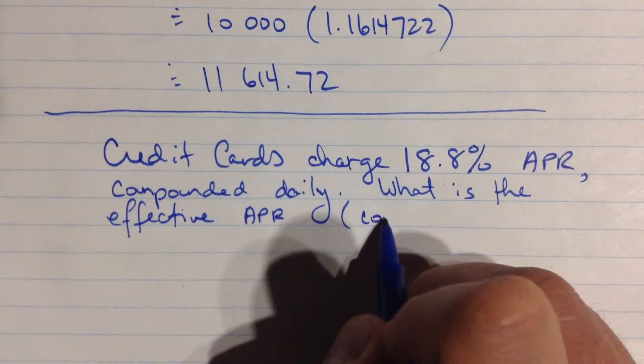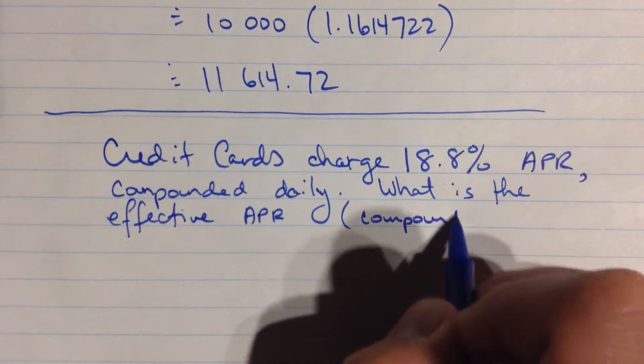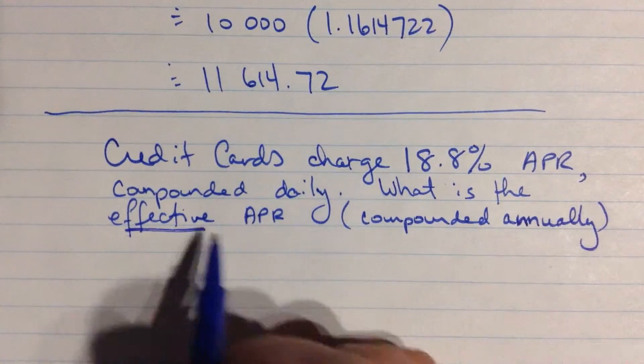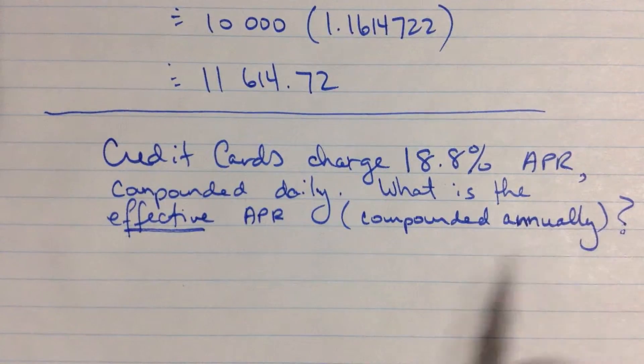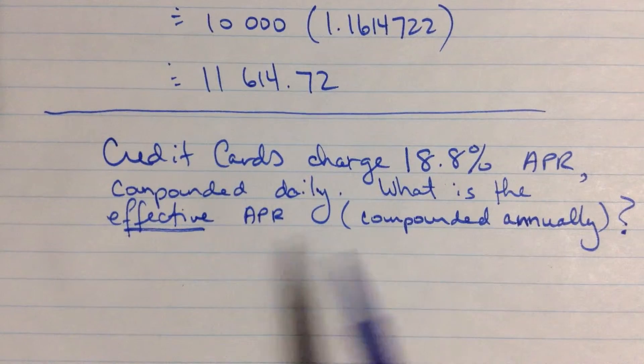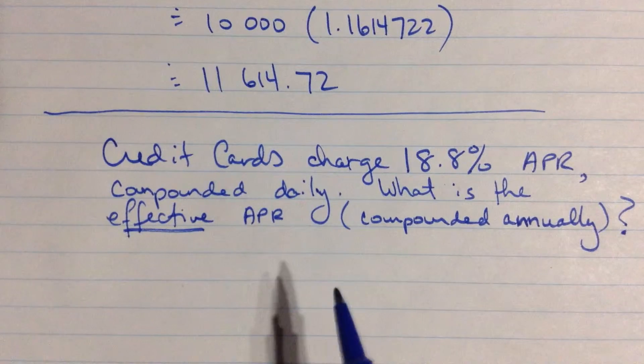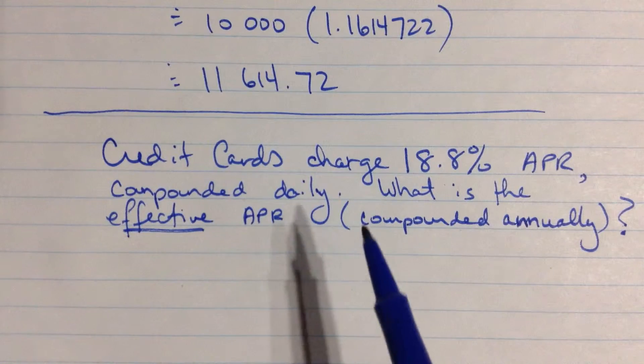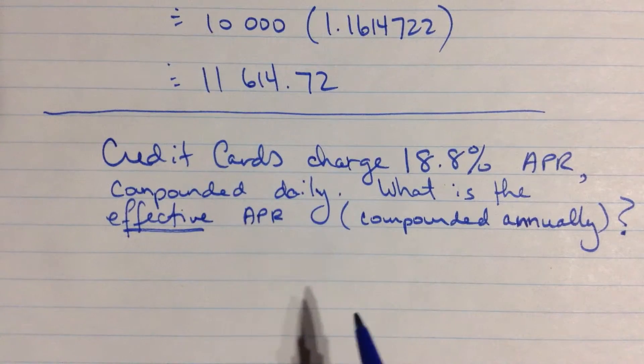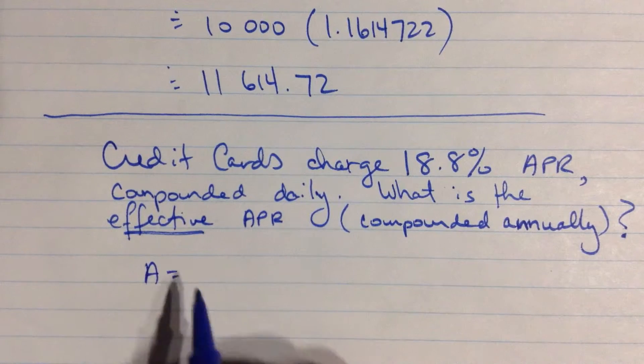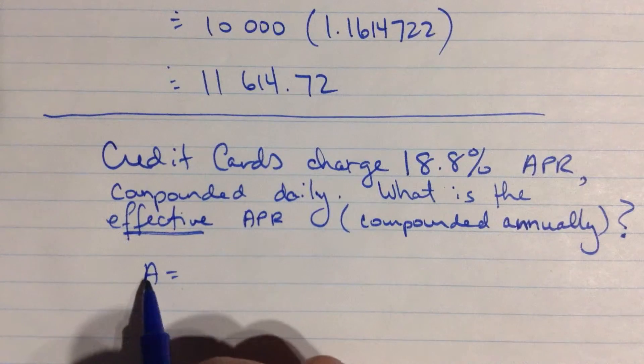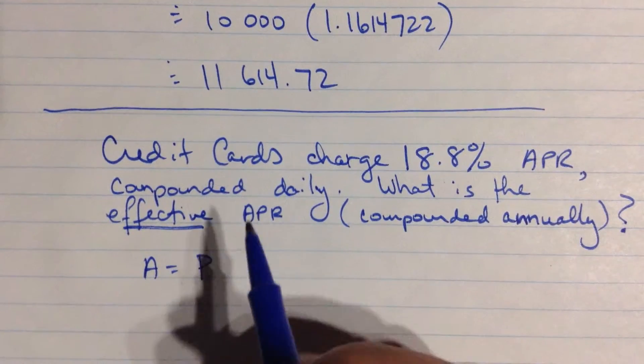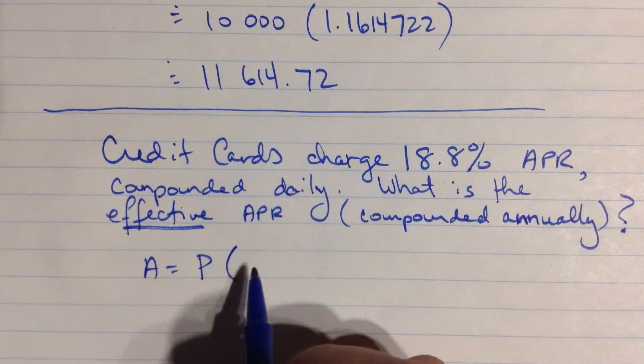So what is the effective, this is a special term, what is the effective annual percentage rate? And that means that it's compounded annually. This term, effective APR, that's the same as saying, well, if I had a different credit card that didn't compound daily but just compounded annually, what would its rate be if it was charging me the same amount? What's the equivalent rate compounded annually? So the way we figure this out then, we don't really even need a specific beginning amount and principle. A final amount and principle. All we need to do is fill in sort of the middle numbers and I'll show you what happens.